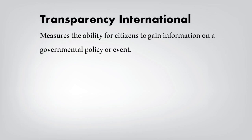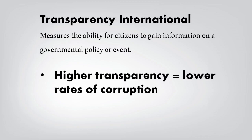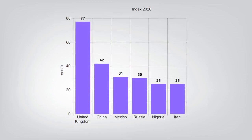Transparency International measures the ability for citizens to gain information on government policy or events — the higher the score, the lower the corruption. Looking at a bar graph, the United Kingdom has the highest Transparency International score, while Nigeria and Iran are at the bottom. This mirrors the HDI rankings closely, suggesting that more developed countries tend to be more transparent. We can correlate this: the more developed a country, the more transparent it may be.